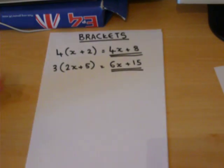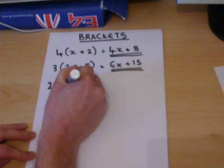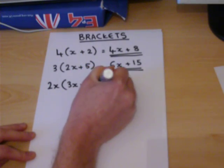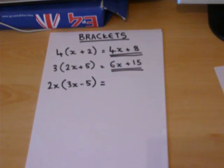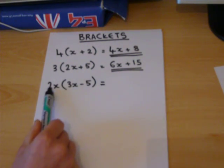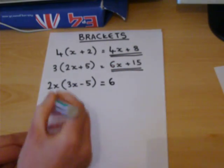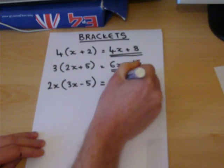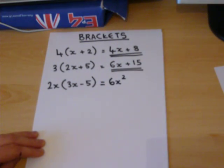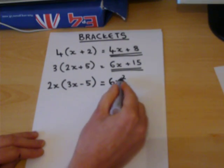I now plan to go through a few more examples. This one looks a bit trickier, but it can be done in a similar way. We have 2x times 3x. Now 2 times 3 is 6, and x times x is x squared. So 2x times 3x is 6x squared.